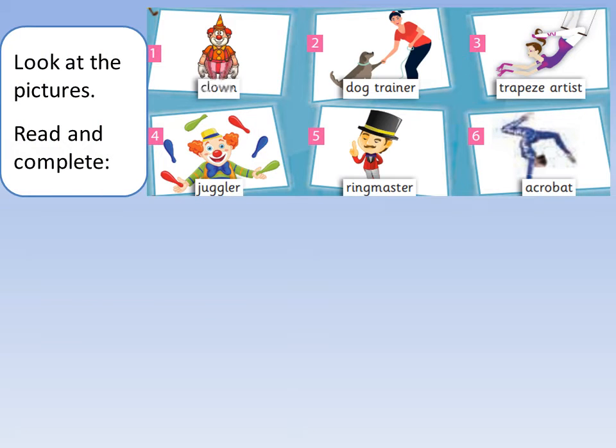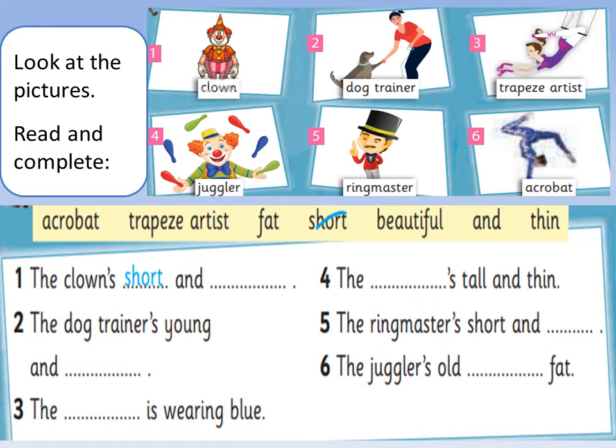Now, look at the pictures, read and complete. Number one: The clown. Look at the clown, he's short and fat. Very good. Number two: The dog trainer is young and, look at the dog trainer, she's young and beautiful. Yes, very good.